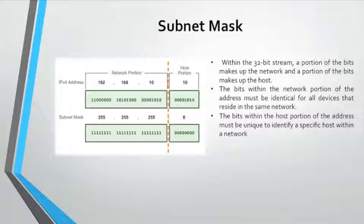Regardless of whether the decimal numbers between two IPv4 addresses match up, if two hosts have the same bit pattern in the specific network portion of the 32-bit stream, those hosts will reside in the same network. But how does the host know which portion of the 32-bit stream is the network and which is the host? That is the job of the subnet mask.